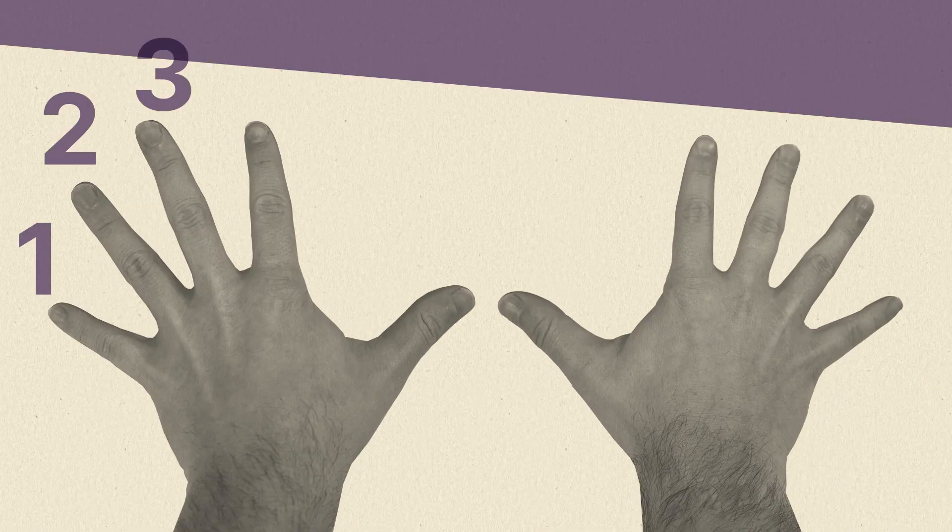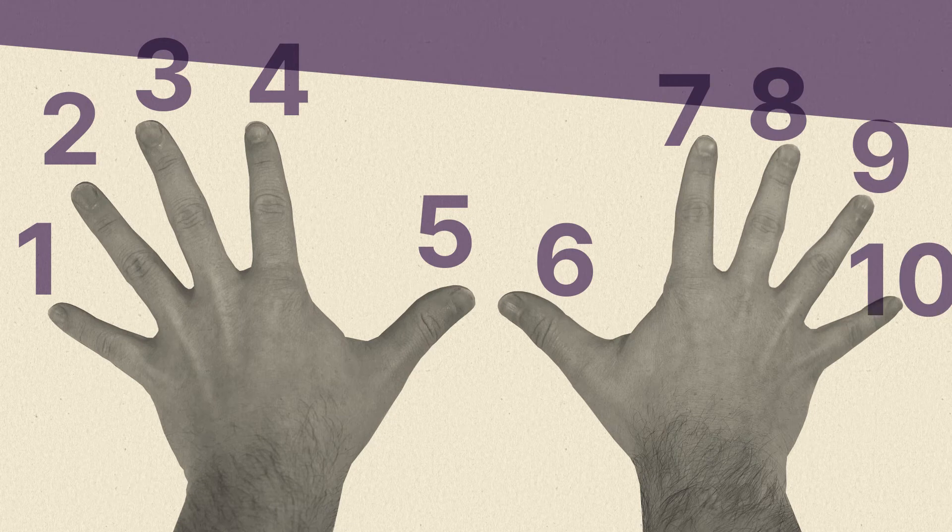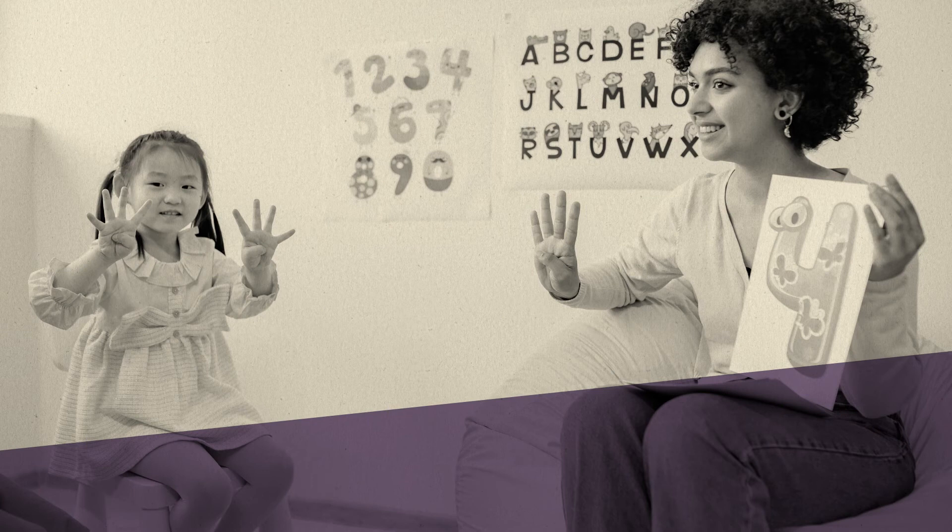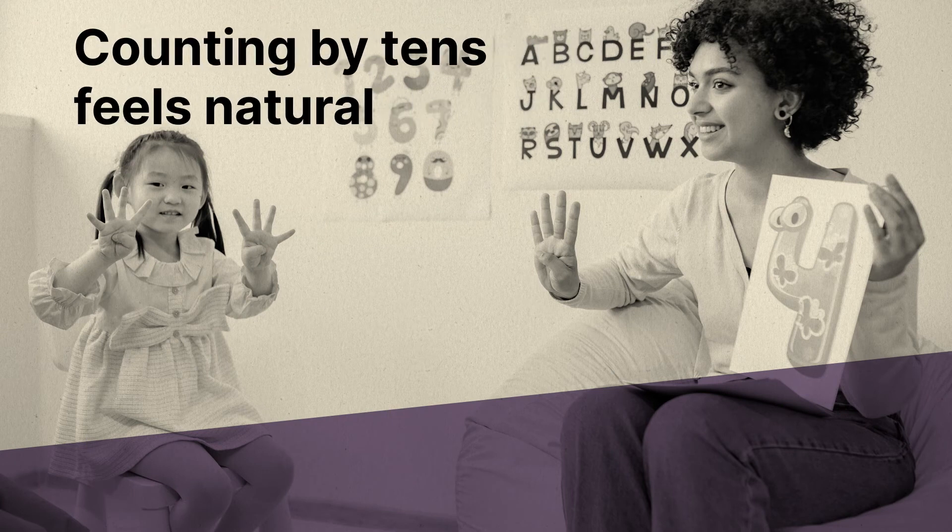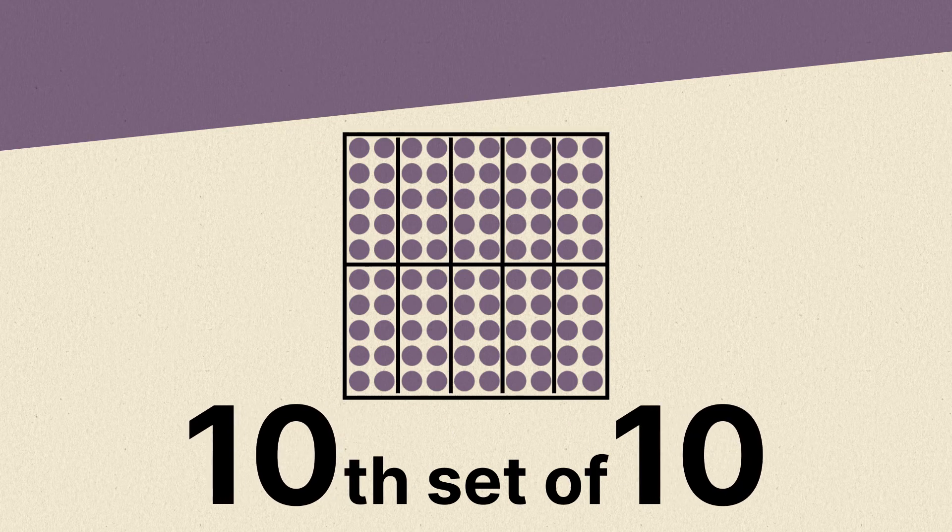Some sources speculate that we originally started using base 10 because we have 10 fingers to count on our hands. And since we learned to count from the time we're young using this system, counting by 10s feels natural and we subconsciously see 100 or the 10th set of 10 as a benchmark, making it an easy point of comparison.